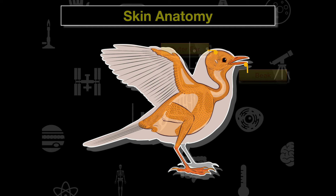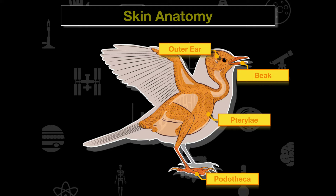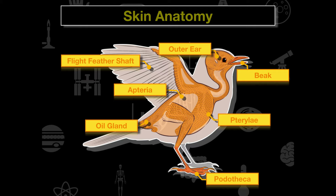Underneath the feathers we see the skin of a bird — similar to what you'd see on a Thanksgiving turkey. The two most distinguishing features on the head are the beak and the outer ear. Moving down, we have the apterium and the preen gland, and at the very bottom we see the oil gland.